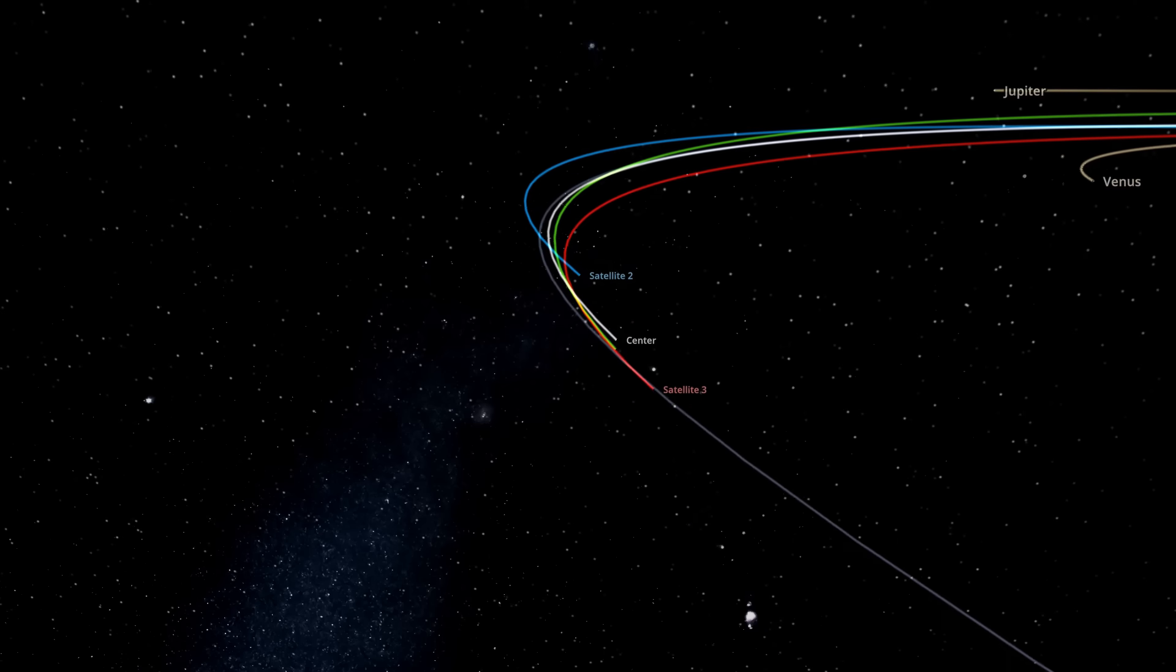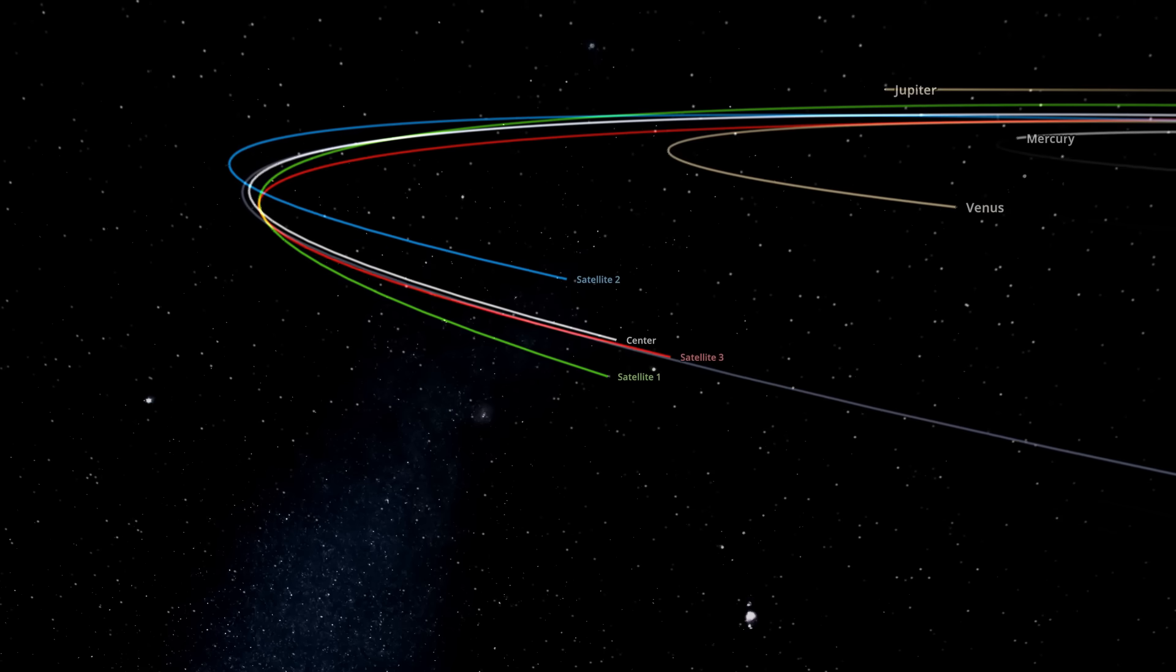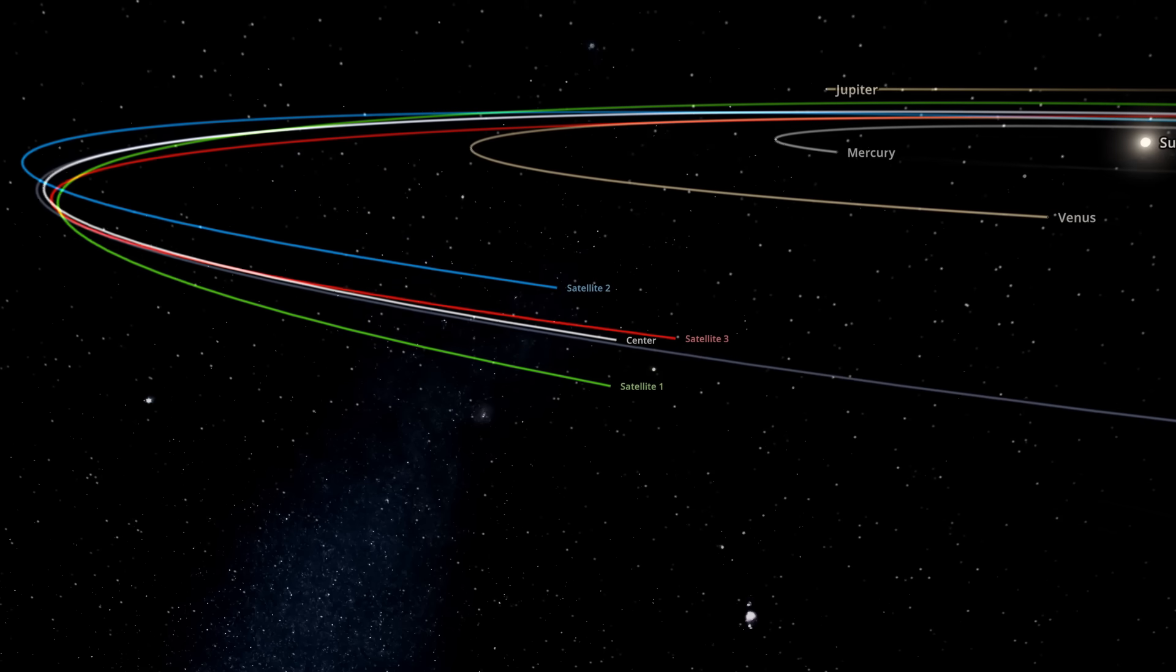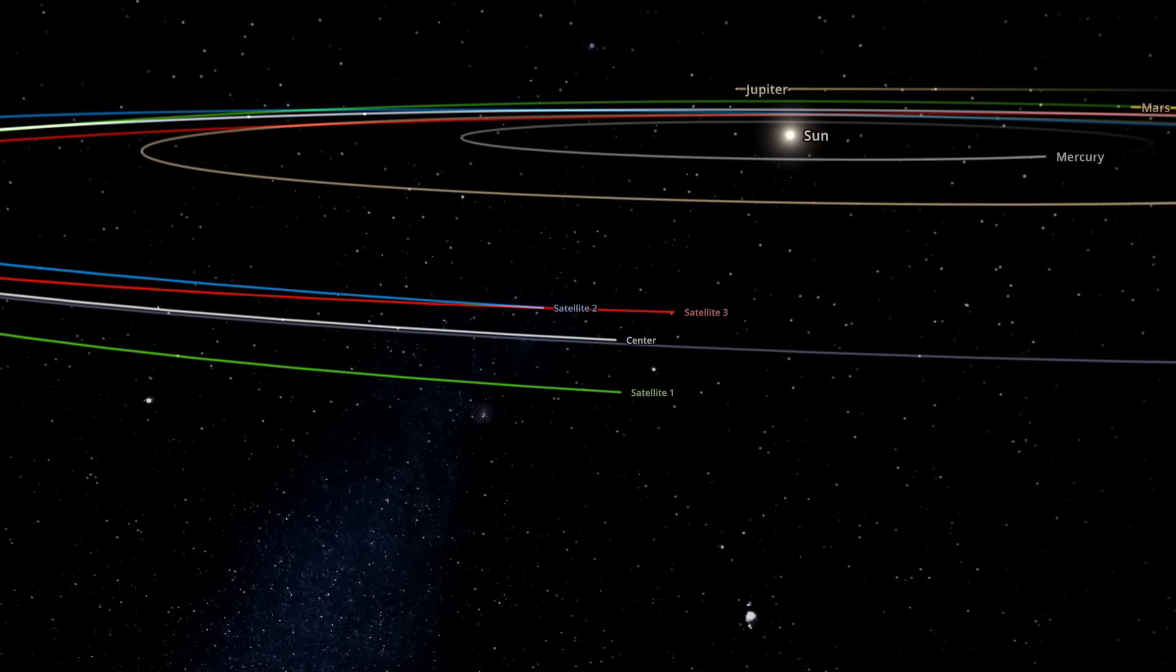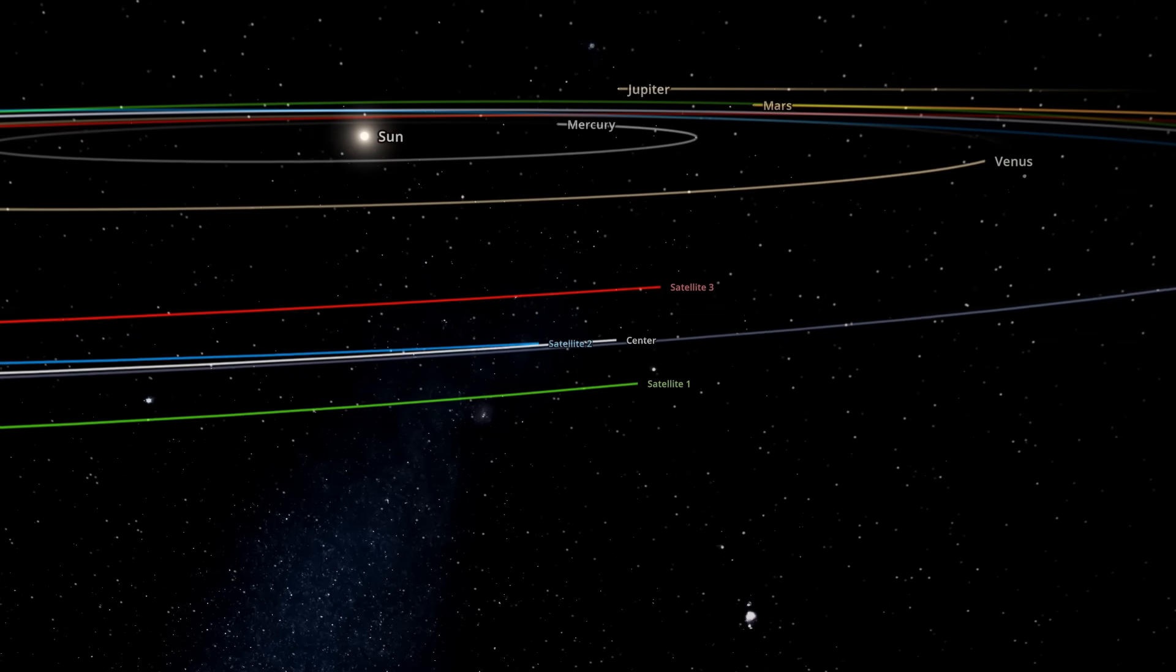To be clear, they're not orbiting each other—there's no gravitational interactions between them. They're orbiting the Sun, and the specific orbits chosen keep them at roughly the same distance to each other throughout the entire orbit.